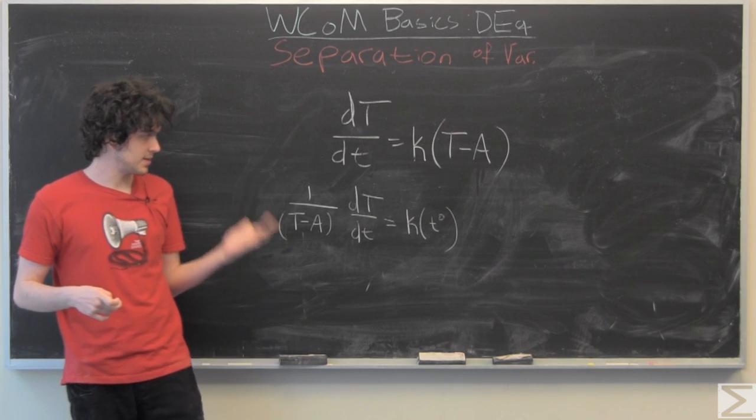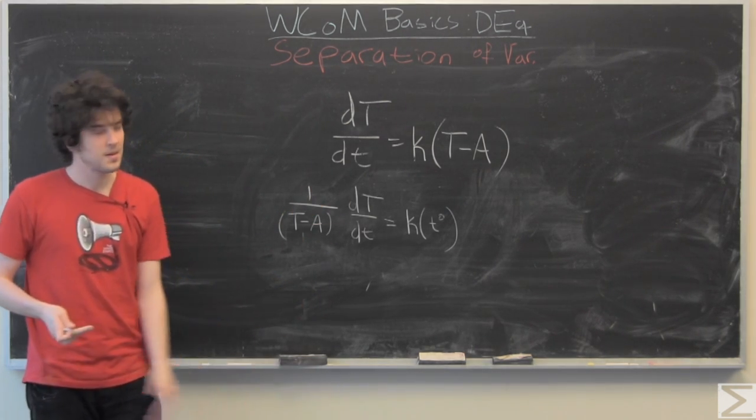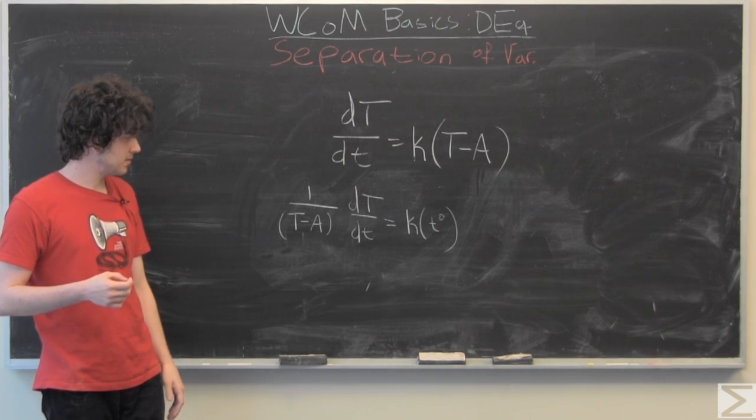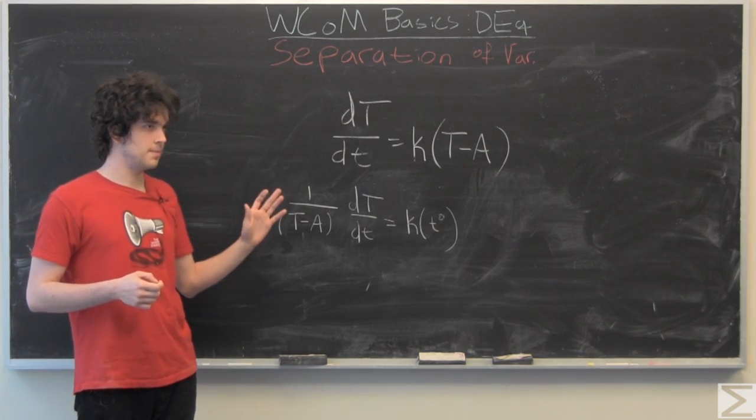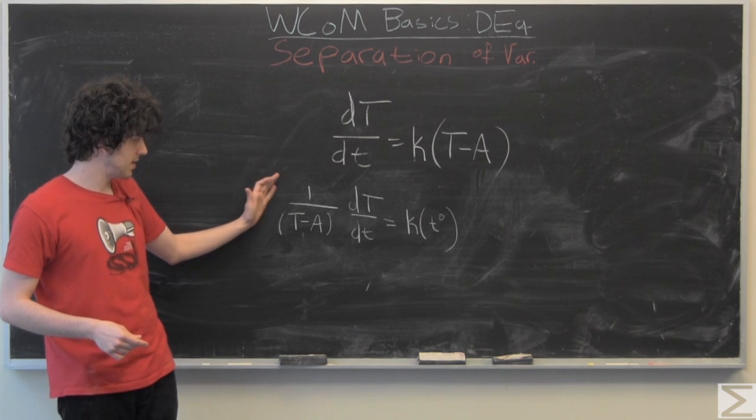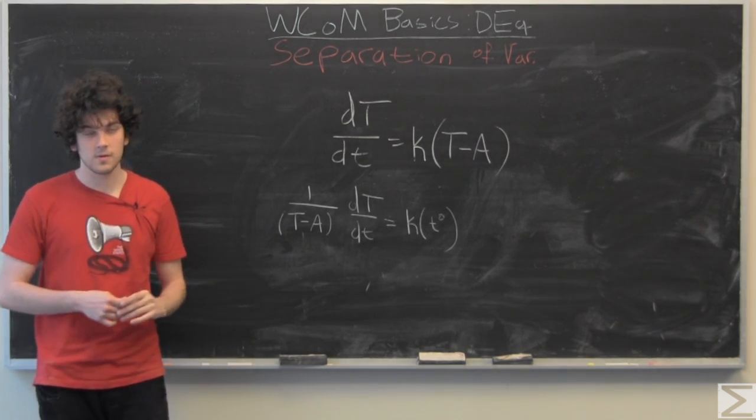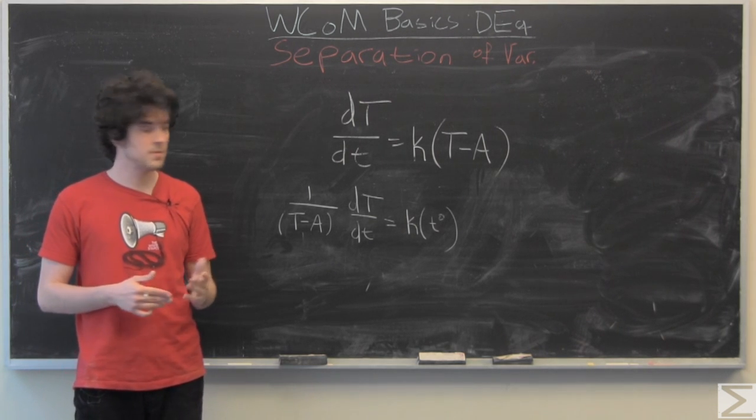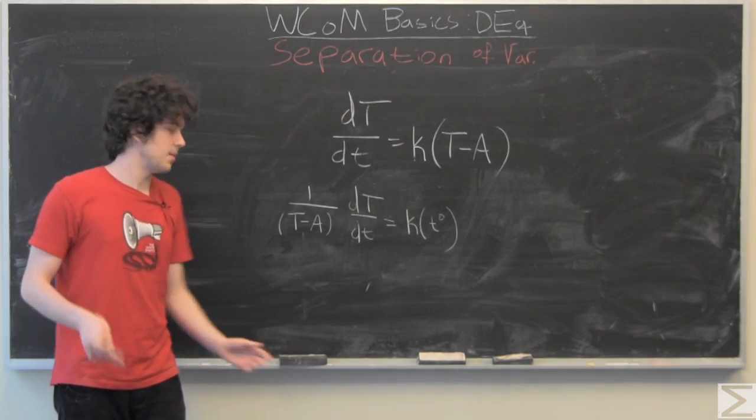Integrate both sides with respect to time because we have two Ts and in the last video we saw that due to the integral form of the chain rule we're going to take the integral of one over T minus A with respect to temperature and the integral of K with respect to time.